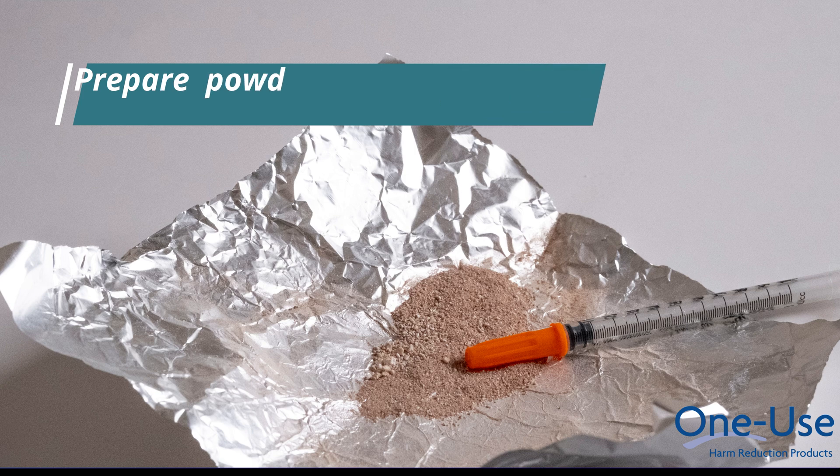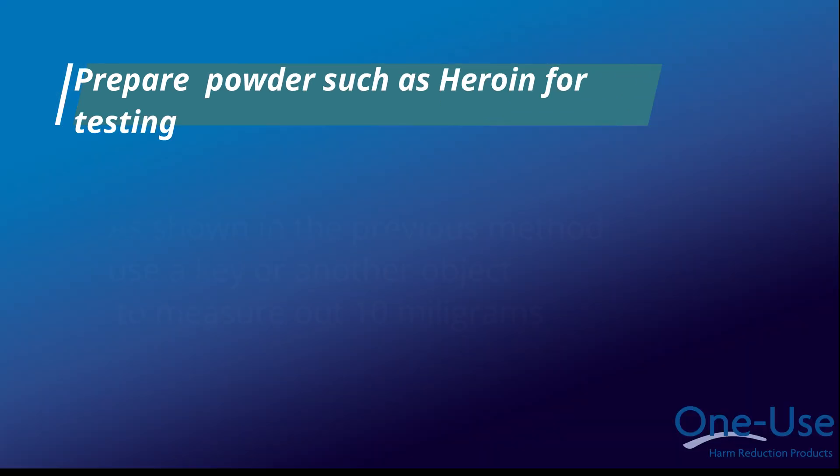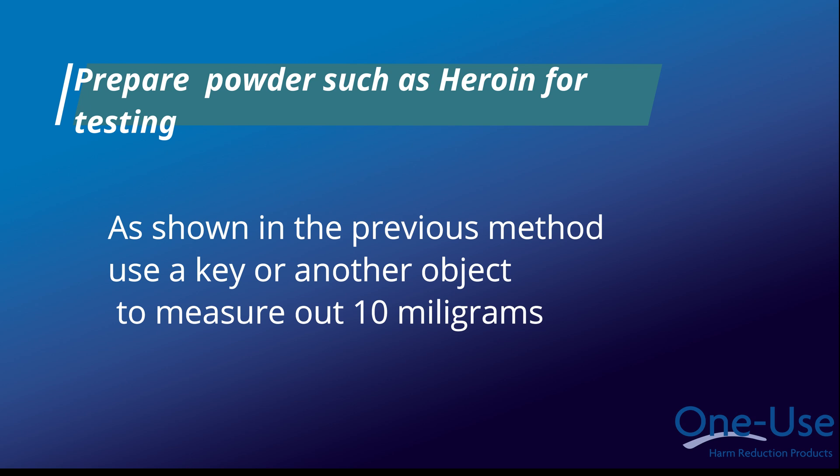Testing powder such as heroin, measure out 10 mg of powder. For testing purposes, as shown in the previous method, use a key to measure out 10 mg.